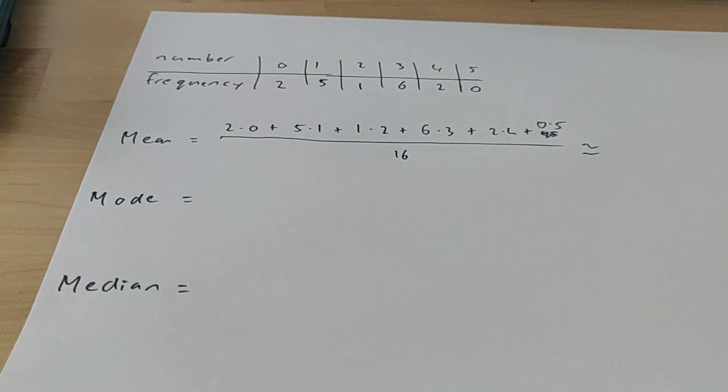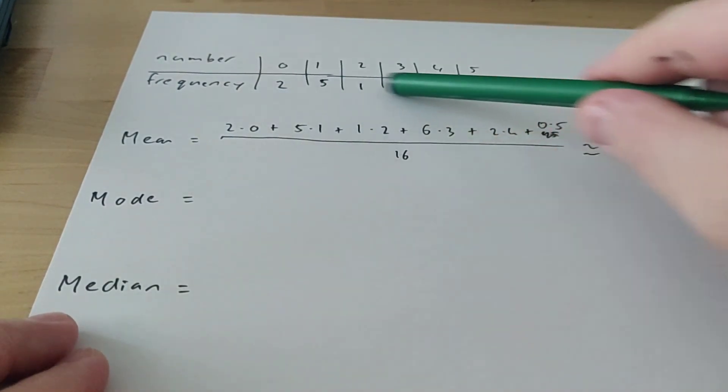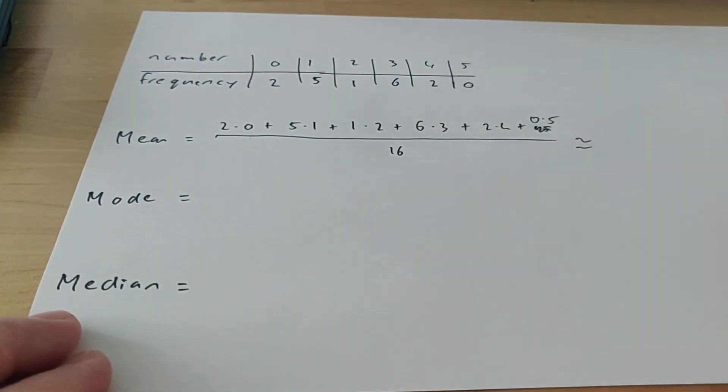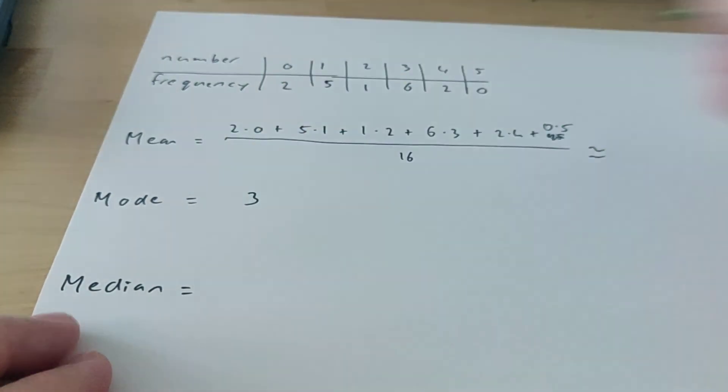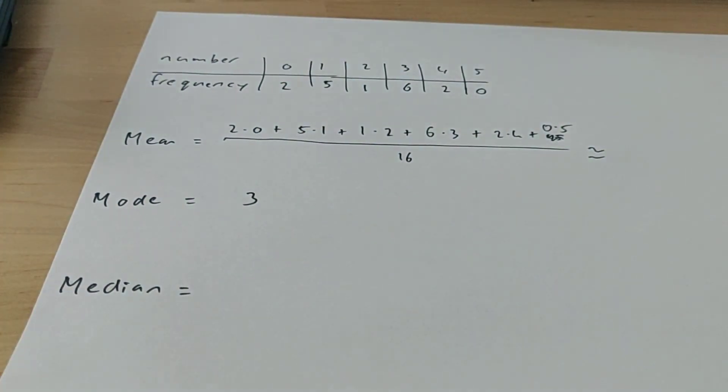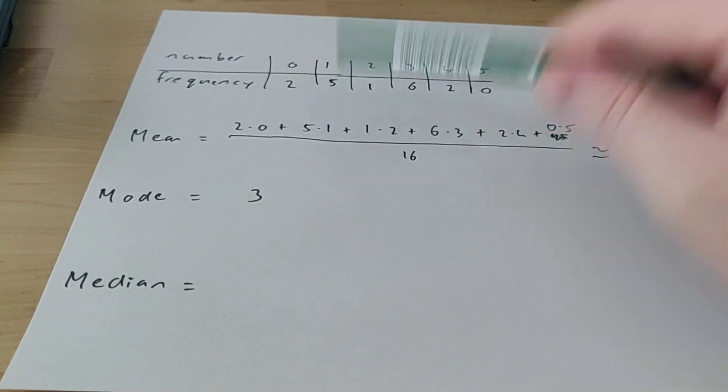The mode is the one that happens most often. So if you take a look where the highest frequency is, you can see that's here. 6 is the highest frequency, so that means that the mode is 3. 3 happens most. Now if 2 of these numbers actually share the highest frequency, so if this was also a 6 for example, then there is no mode.